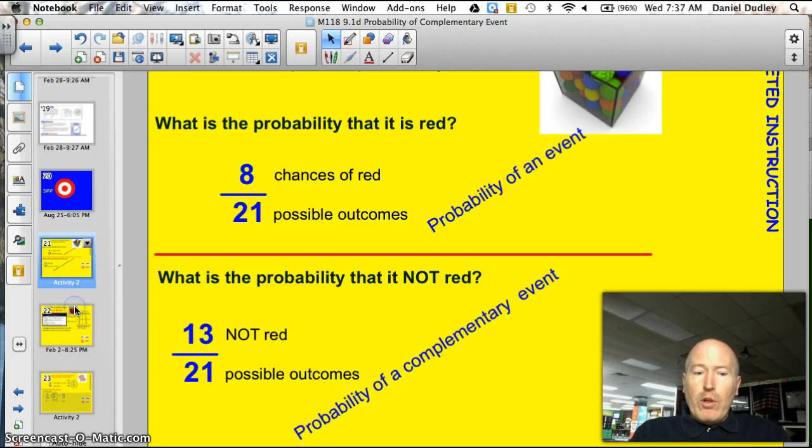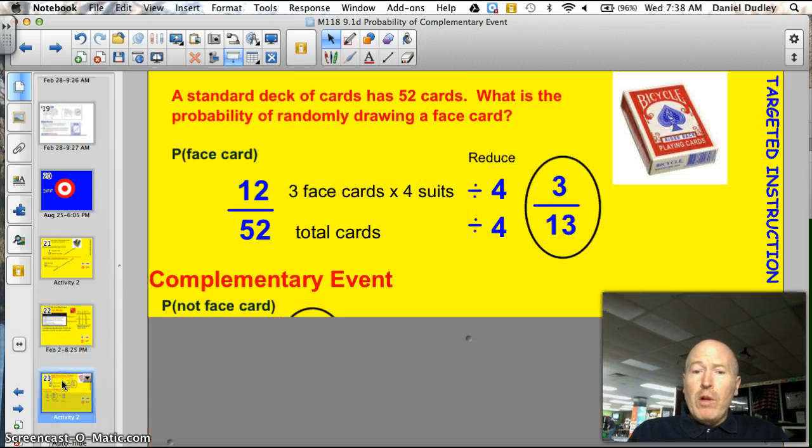Let's take a look at some vocabulary words here. Here's the big one tonight. Complementary events. All events that are not the outcome, or not the favorable outcome, or the desired outcome. So when you look at rolling a die, the probability of rolling a 1 is 1/6. The probability of that complementary event is 5/6. Probability of rolling a 3 or 4, well, that's 2 out of 6, or 1/3. The probability of rolling the complementary event would be 4 out of 6, or 2/3. It's important that we always express these in lowest terms. So complementary events are like looking for the opposite of what you're looking for.